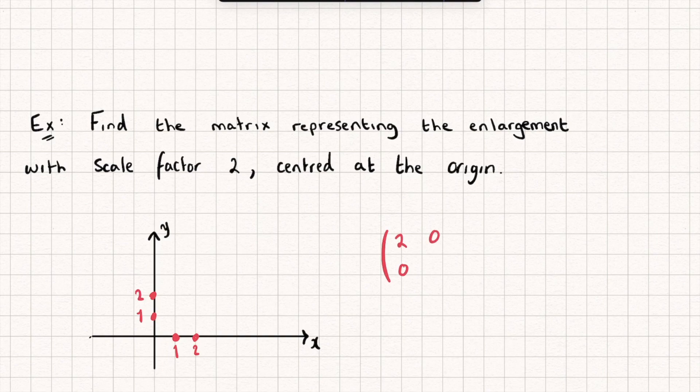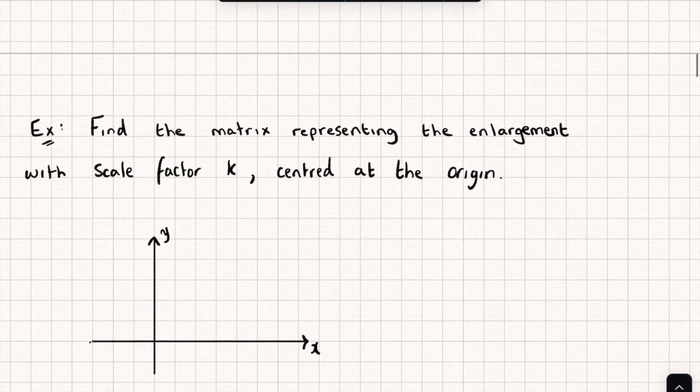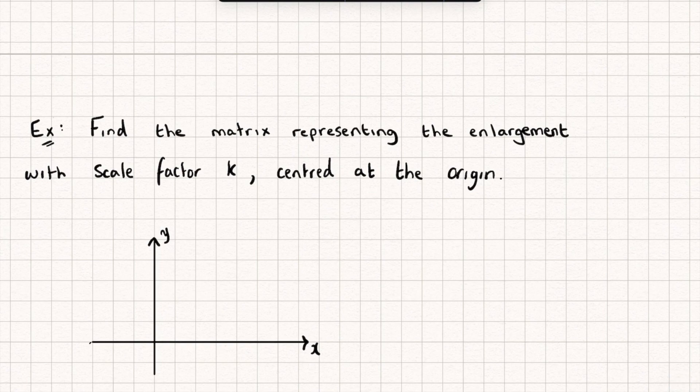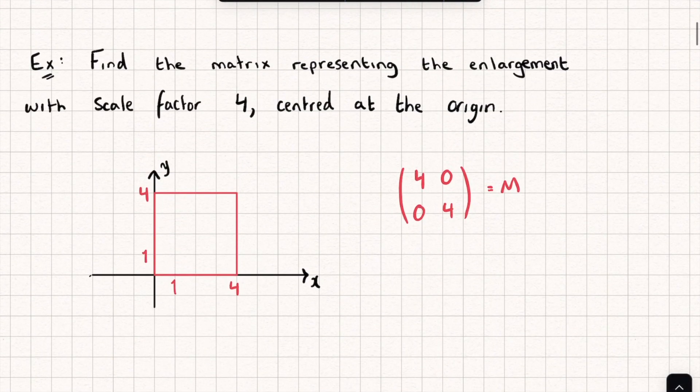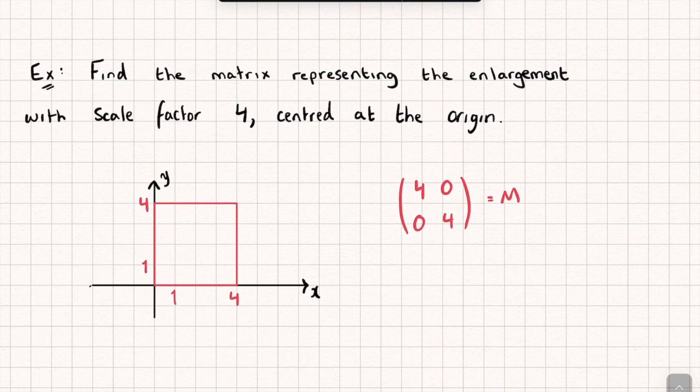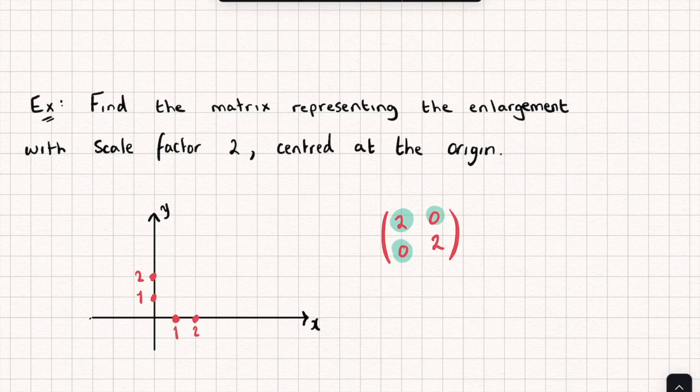We can now extend this idea for any enlargement centered at the origin with scale factor k. Let's look back: when it was scale factor four we had 4, 0, 0, 4, and when it was scale factor two we had 2, 0, 0, 2.